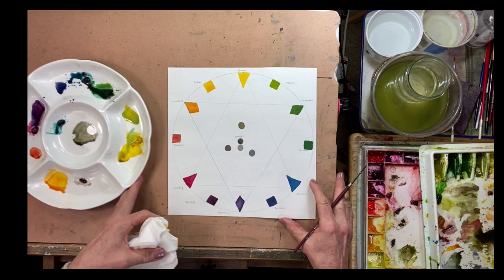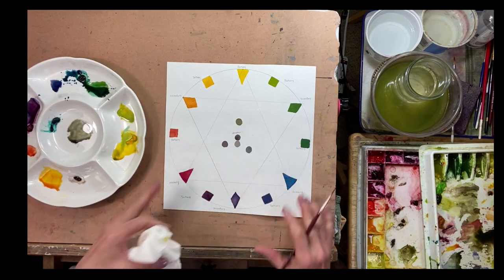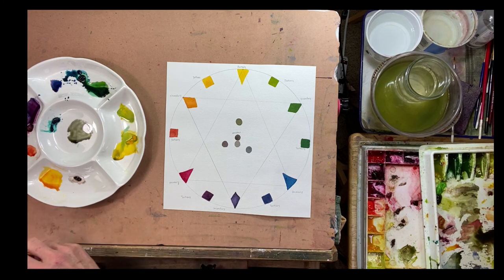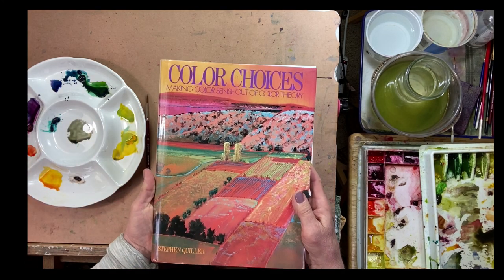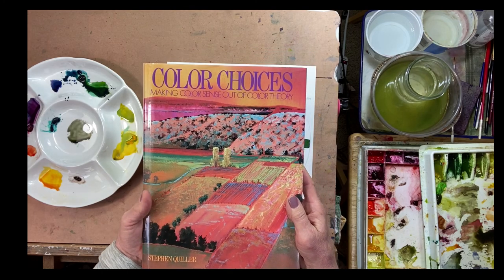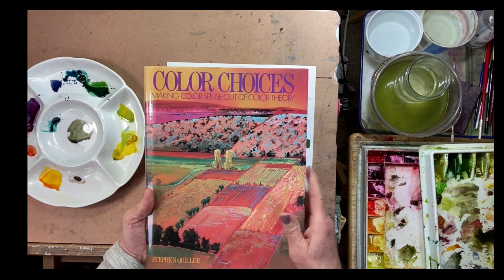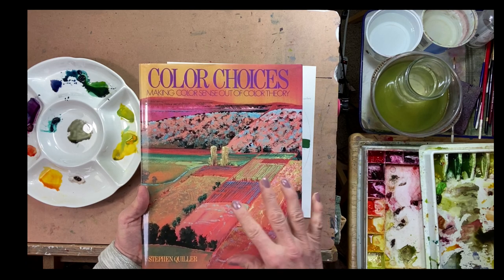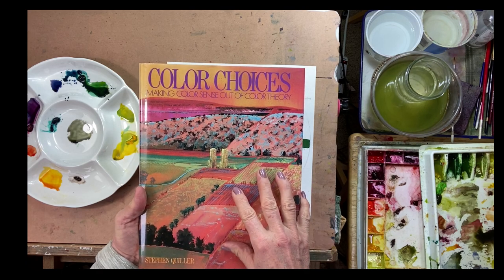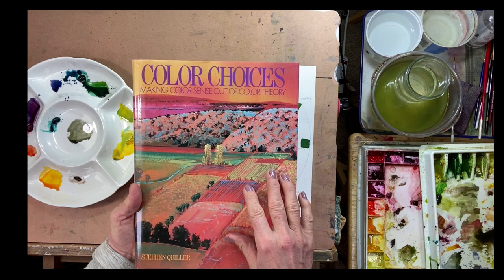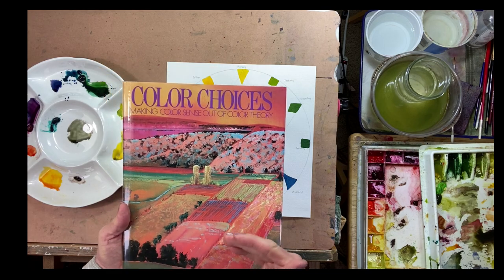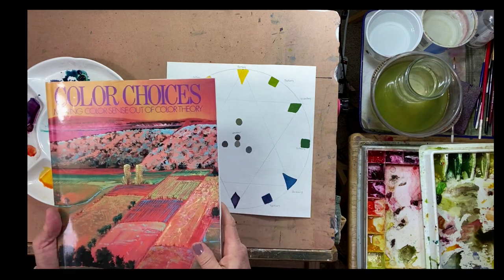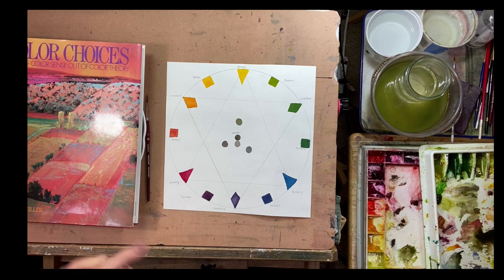So I hope that helps you guys. Get a scrap piece of paper and put together your own color wheel. If you want to try to find this Color Choices by Stephen Quiller, I'll put a link in the description down below. I saw it on Amazon, it's still there. I don't know if they have a hardcover or it's just softcover, but either way it's a really valuable book to own. So I would highly recommend going out and getting it. Take care you guys, see you in the next video. Thanks for watching.